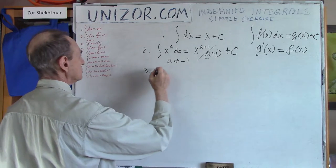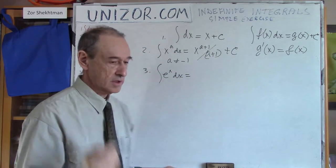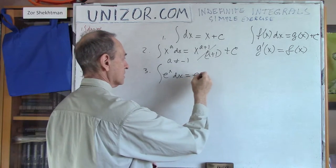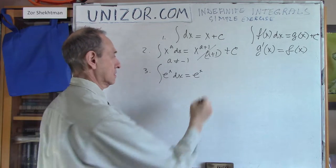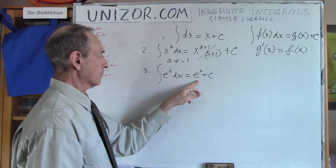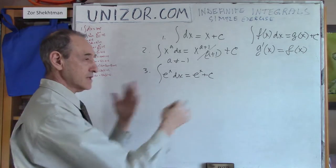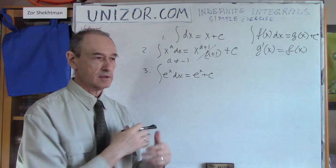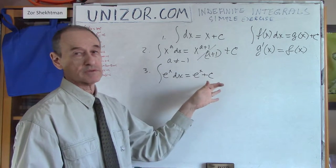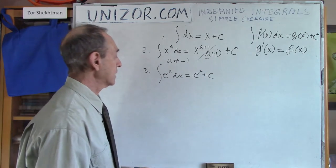Next: e to the power of x. e^x is the only function whose derivative is equal to itself. So the integral is e^x plus c, obviously, because the derivative of e^x is equal to e^x. These are all very trivial things, immediately following from what we know about derivatives — we know the derivative of a power function and the derivative of the exponential function.